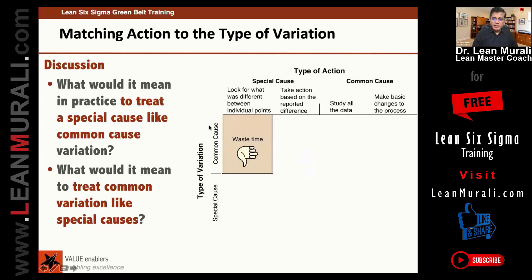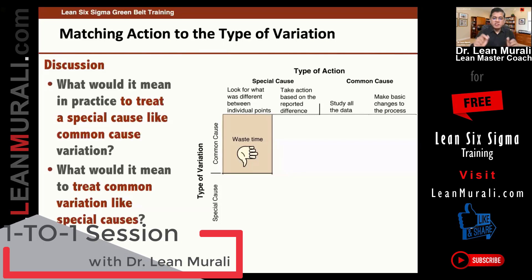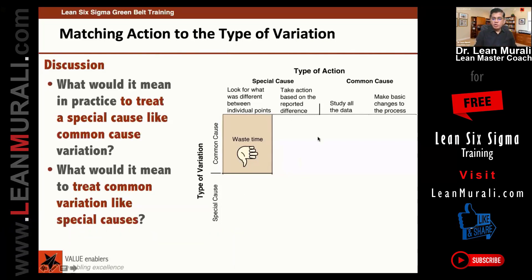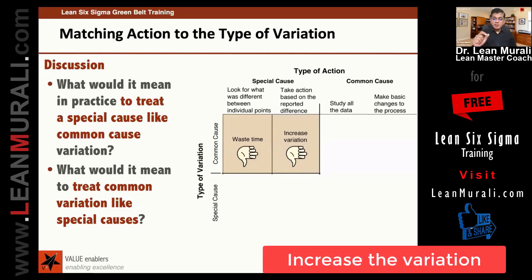Suppose it is a common cause and you take action based on the reported difference. Assume that anyway you wasted time, but you also take action based on this reported difference. You are treating it as if it were a special cause. So it will increase the variation. If it is a common cause and you take action based on the difference between individual points, it will increase the variation.